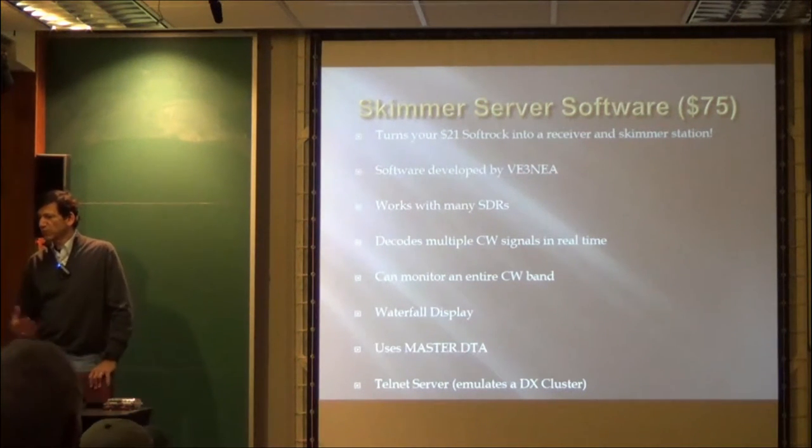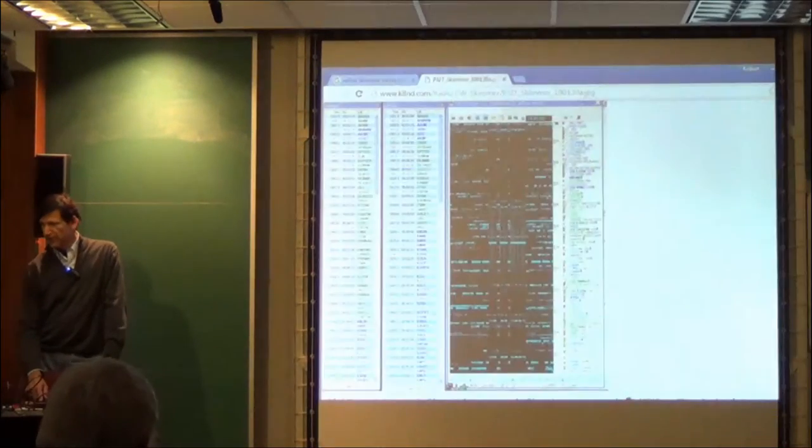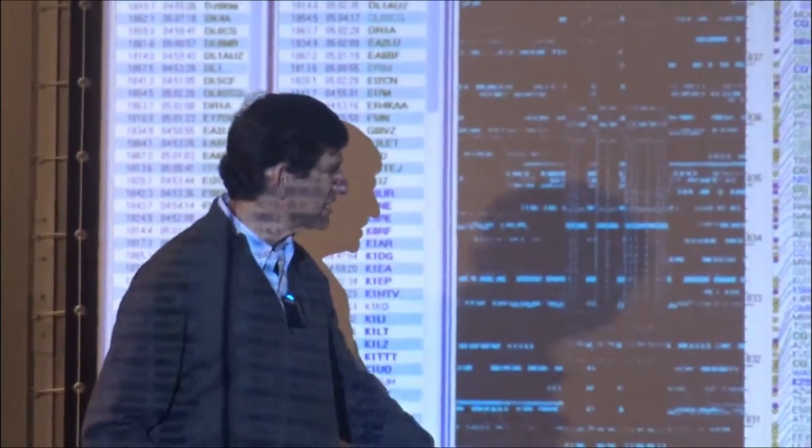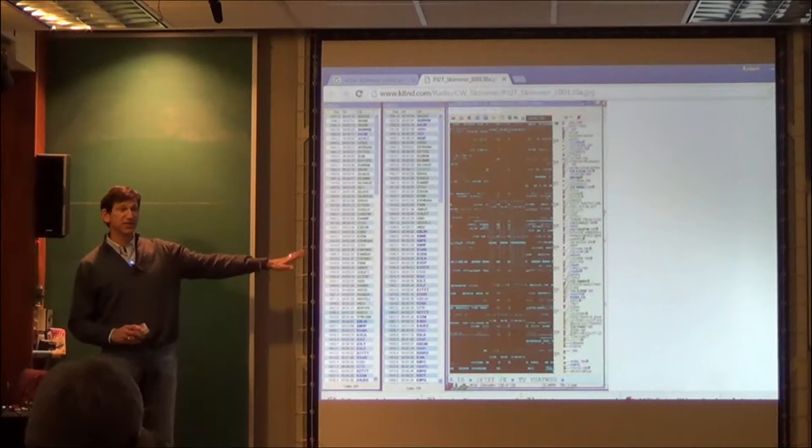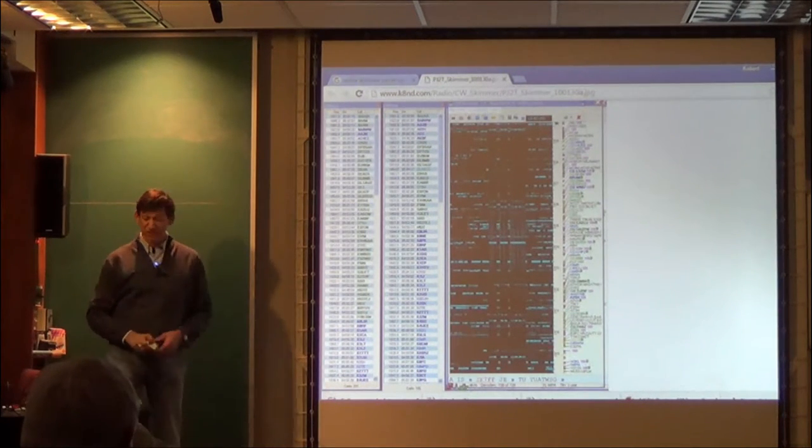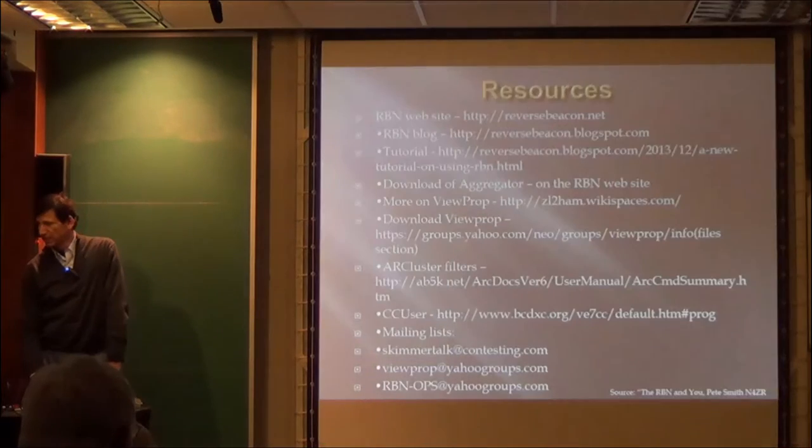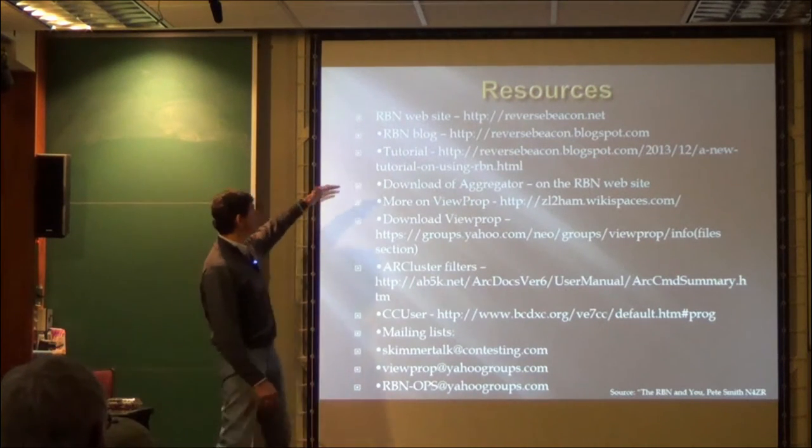The skimmer server software turns your $21 soft rock into a receiver in a skimmer station. It was developed by VE3NEA. It works with many software defined radios. It decodes multiple CW signals in real time, can monitor an entire band, provides a waterfall display, and operates as a telnet server. And that's what it actually looks like. So, even with this very humble little radio, it hears all of these stations, and it decodes them, and then it feeds them. I mean, this is what I saw on my station with this little thing, and it was just really fun to do. Sensitivity is surprisingly decent. Yeah. And then at the back of my presentation, I imagine my presentation will be posted. This is just a list of resources. Again, this is a courtesy of N4ZR and for further information.